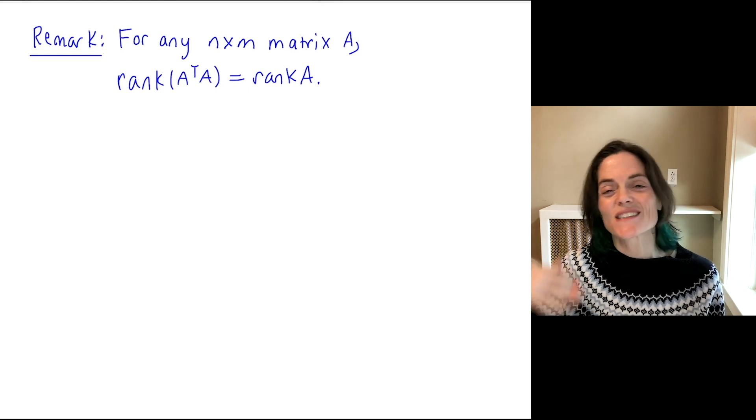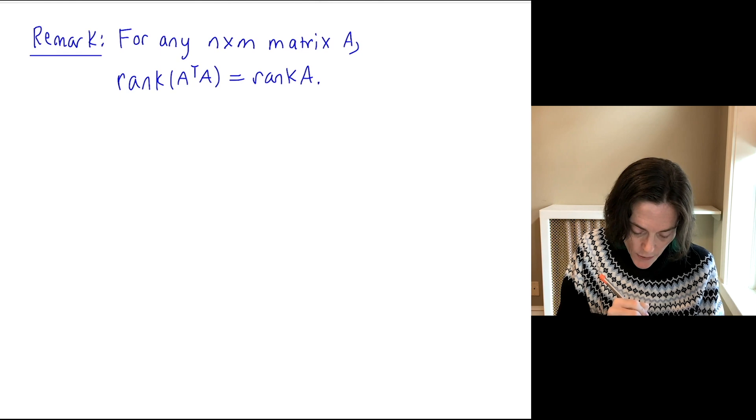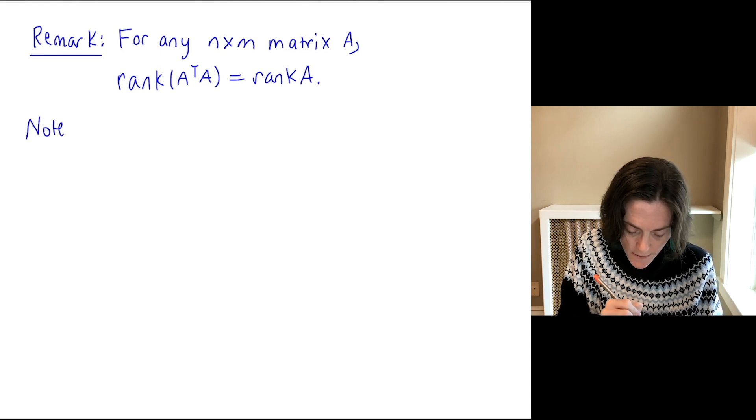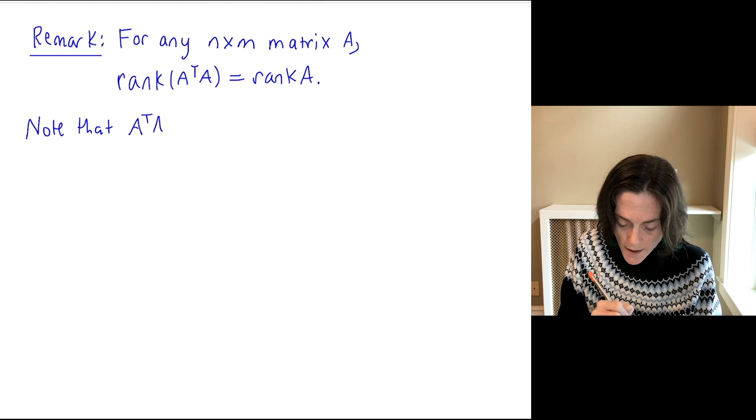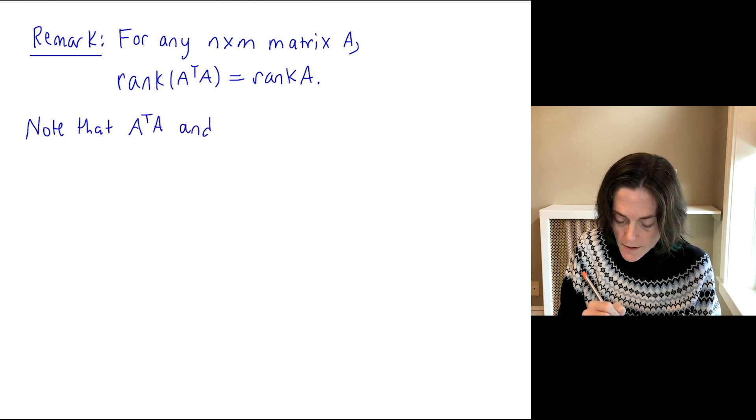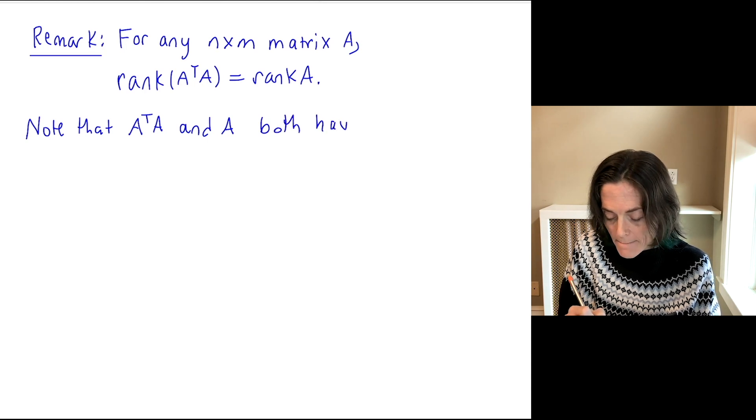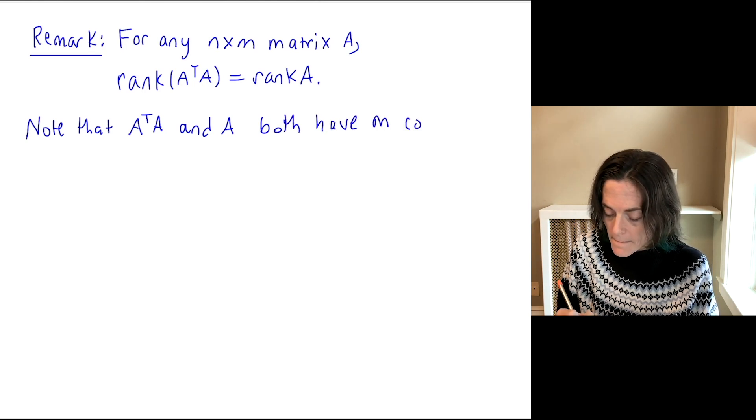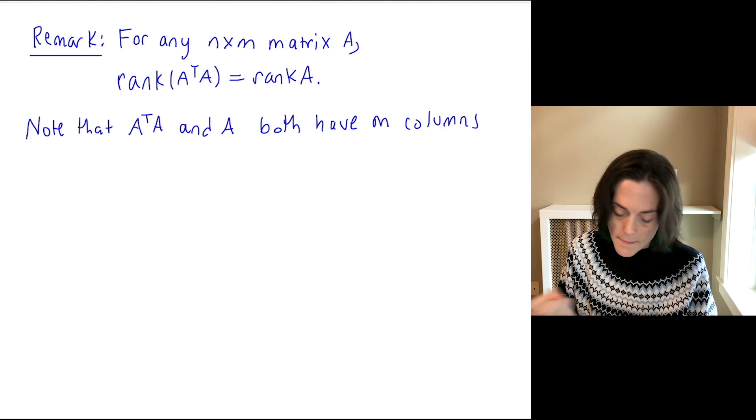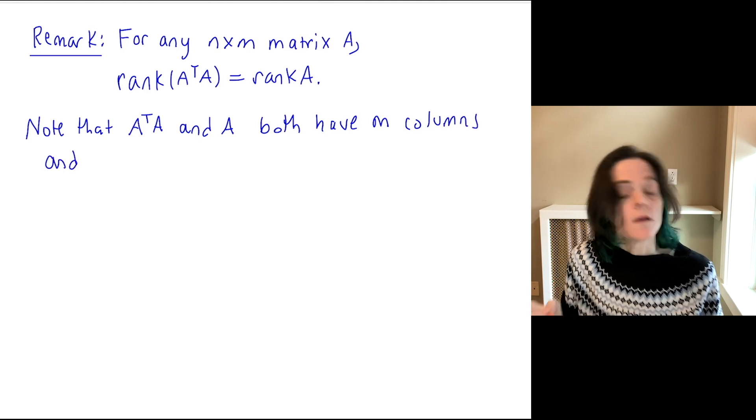How could we see this? As I mentioned, it follows directly from the theorem. You note that A transpose A and A both have m columns.